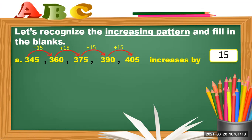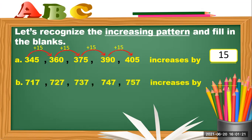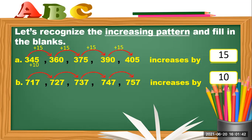How about letter B? From 317 to 327, 327 to 337, 337 to 347, 347 to 357 — it increases by 10. That is plus 10, plus 10, plus 10, plus 10. So letter A increases by 15 and letter B increases by 10.